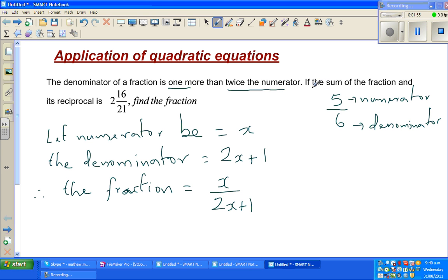Now the next part. If the sum of the fraction, sum means addition, what they're saying is if you add the fraction and the reciprocal. Now what is the reciprocal? The reciprocal of 5 over 6 is 6 over 5. So reciprocal basically means you swap the numbers around.